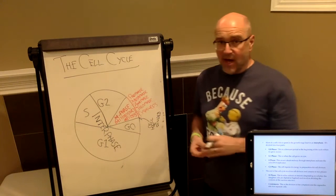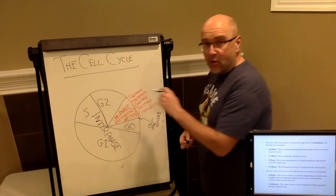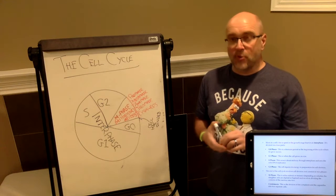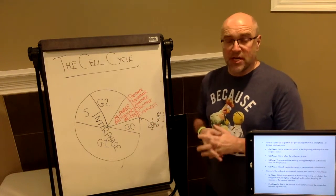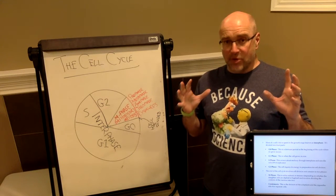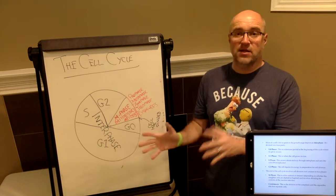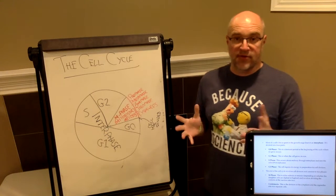So depending on the cell, interphase is going to be broken into either four or three portions. The first portion that some cells do after cell division is called G0, which is right here. G0 is basically a time where a cell is kind of recuperating after the cell division. As you can well imagine, taking one cell and making it into two requires a lot of energy on the part of the cell.